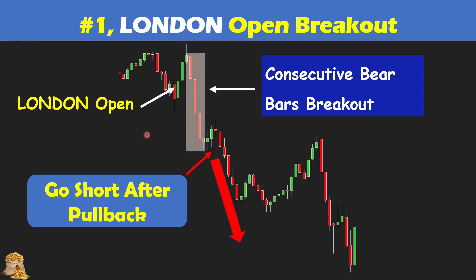A few things to pay attention to here. First, the breakout has to be strong — upon the open the upside breakout is not strong and it's not breaking out, whereas the downtrend is very strong. Second, wait for the pullback. You don't want to trade in the middle of the trend because the pullback could be huge or you could get the direction wrong and take a loss. That's why the second point is to wait for the pullback.